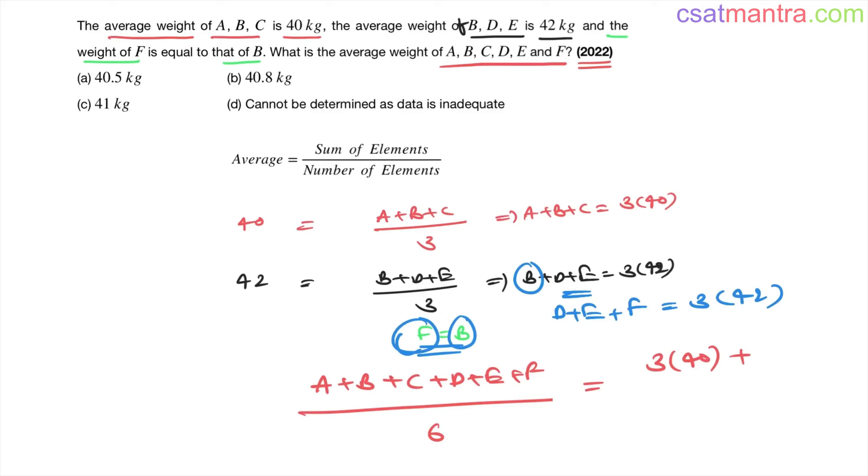So D plus E plus F is equal to 3 into 42. So 3 into 42 divided by 6. Now I am taking 3 common, 40 plus 42 divided by 6. Three 2s, okay. That is 40 plus 42 is 82, 82 divided by 2. That is equal to 41. Answer is C.